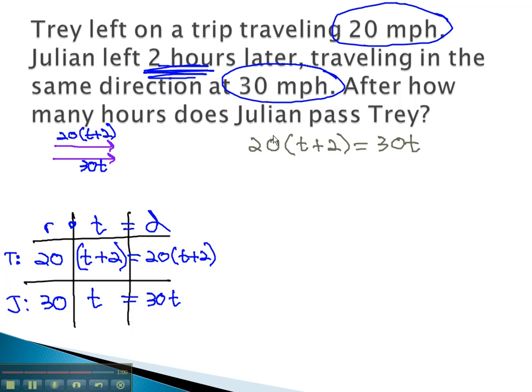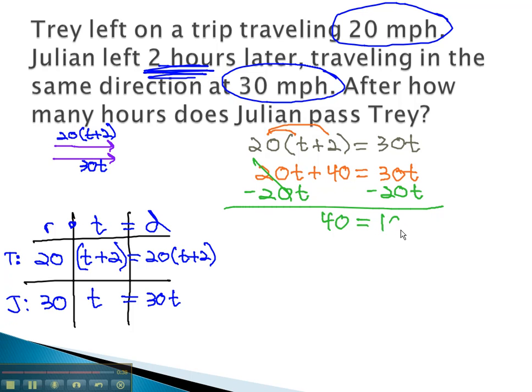We can now start solving this equation by distributing the 20 through. 20 times t plus 40 equals 30t. Start by getting the variable on the same side by subtracting 20t from both. This gives us 40 equals 10t. We finally solve for t by dividing both sides by 10. t is equal to 4, 4 hours. It will take Julian to catch up with Trey.